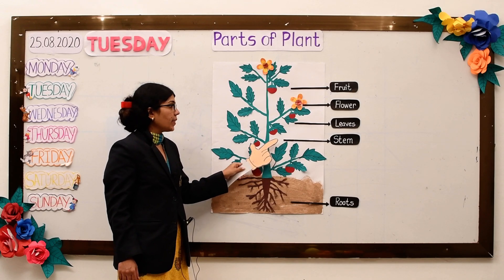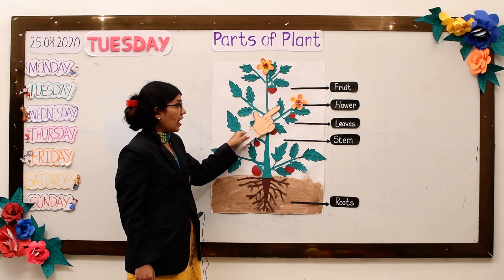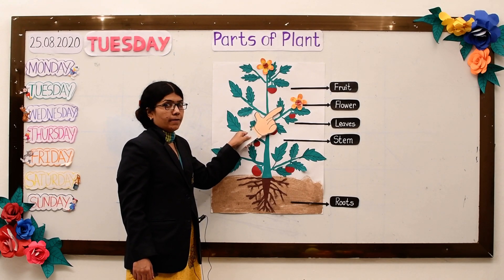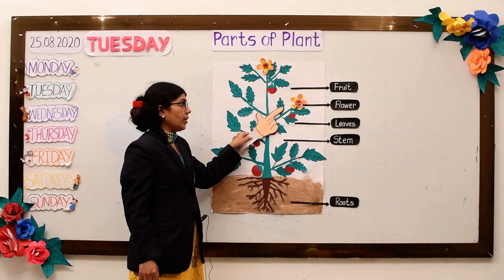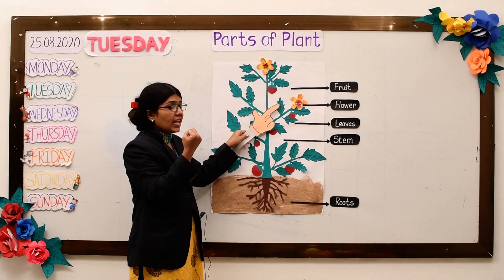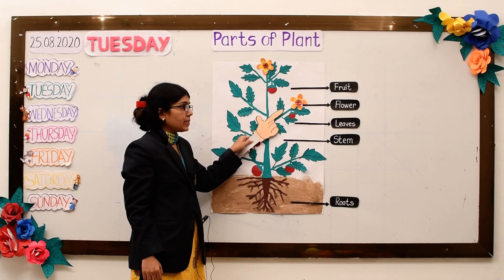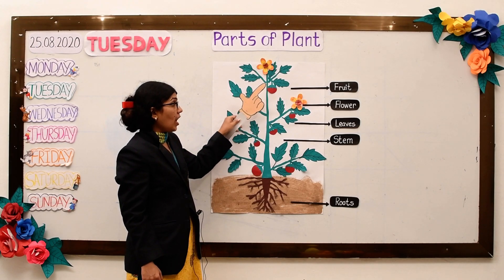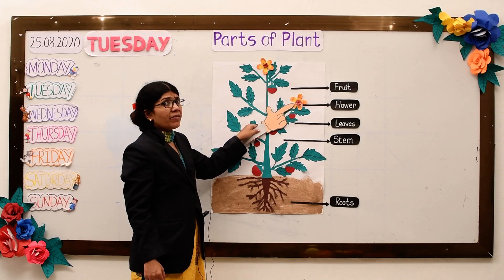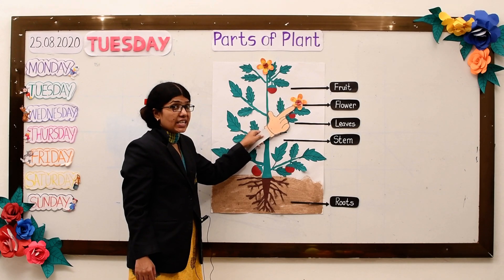Now, leaves. Most leaves are flat and green in color. What do leaves do? They collect sunlight and help to make food for the plant.